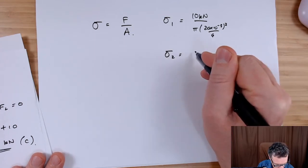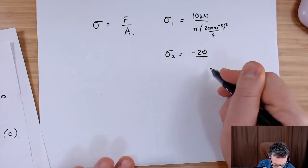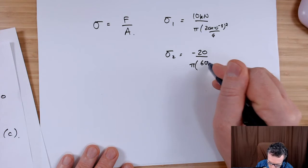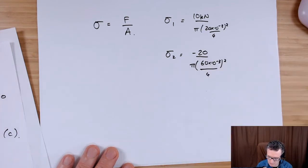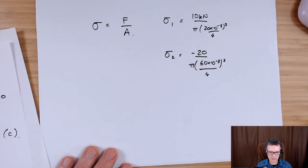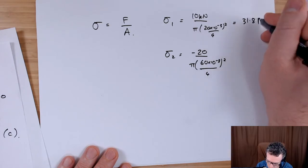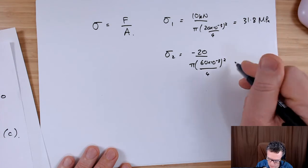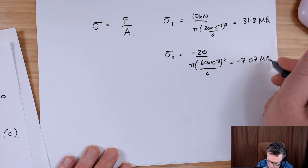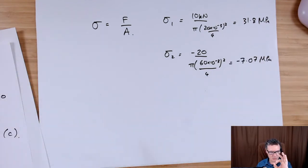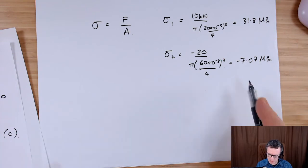For the bottom one, that's minus 20 — I'll keep the minus there to remind me that it's in compression — divided by the area. The bottom section has a diameter of 60 millimetres. So you should get for the top section 31.8 megapascals, and for the lower section minus 7.07 megapascals. We're expecting the top one to experience more stress because it's a smaller cross-section, whereas the lower section is bigger so the stress is distributed wider, giving a lower stress value.